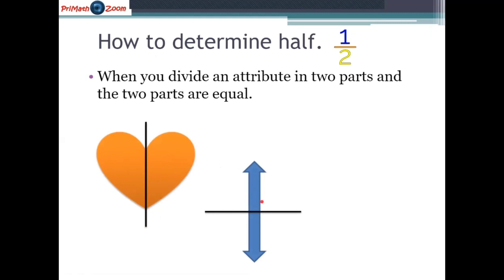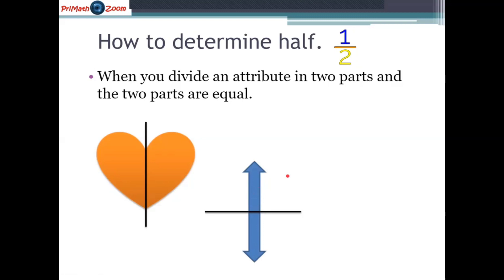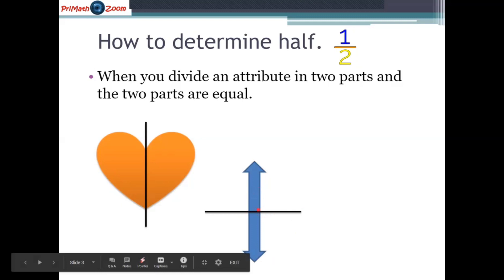This other attribute, where we divide it into two equal parts, one here, one here, and the two parts are the same size, meaning that they are equal and one part is called a half. Here we can say then that one half and another half will give us a whole.